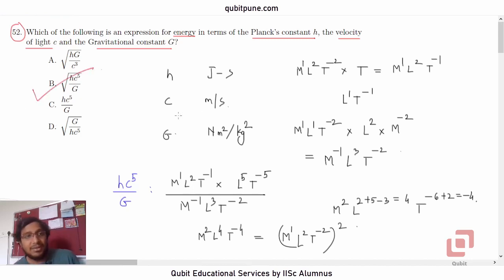Correct. So Planck's constant is there, you should know its SI unit, you can calculate its dimensions. Speed of light, easy. And then Newton's constant of gravitation, G, capital G. And based on that, we have... And also, the options. Options play an equally important role here.